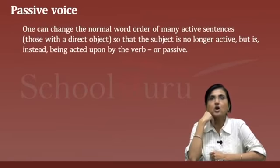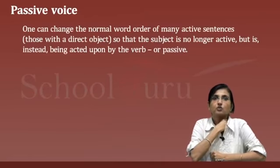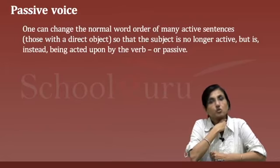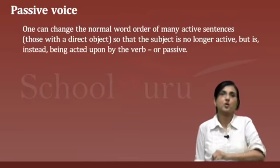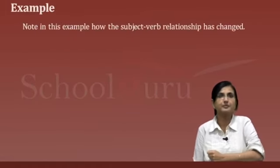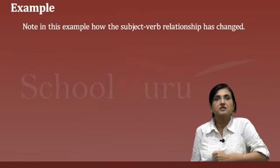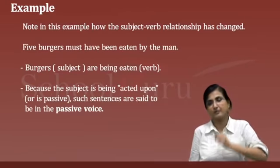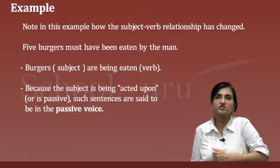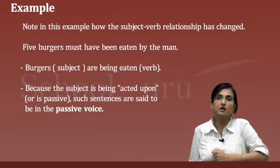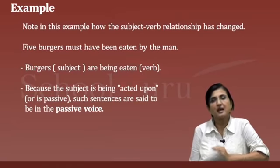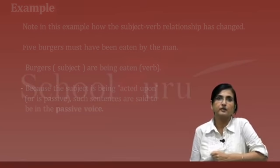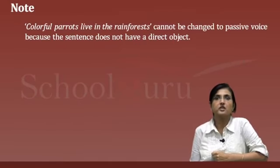Passive voice. One can change the normal word order of many active sentences — those with a direct object — so that the subject is no longer active but is instead being acted upon by the verb, or passive. For example: 'Five burgers must have been eaten by the man.' Burgers is the subject; 'must have been eaten' is the verb. Because the subject is being acted upon, or is passive, such sentences are said to be in the passive voice. Note that 'Colorful parrots live in the rainforests' cannot be changed to passive voice because the sentence does not have a direct object.